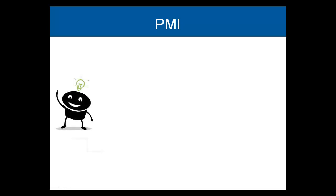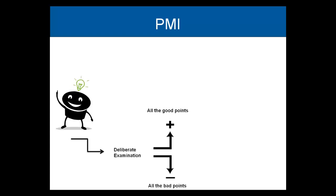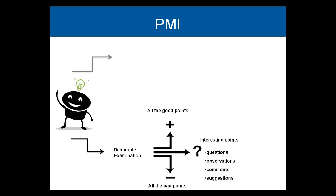The PMI is a deliberate examination of the idea for good, bad or interesting points, instead of immediate acceptance or rejection. Without a PMI, most judgments are based not on the value of the idea itself but on your emotions at that time. With a PMI, you decide whether or not you like the idea after you have explored it, instead of before.